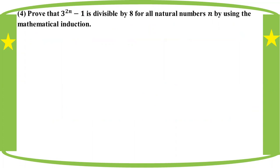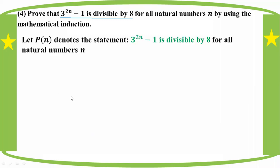Prove that: 3 to the power 2n minus 1 is divisible by 8. That is, 3^(2n) - 1 is divisible by 8, for all natural numbers n, by using mathematical induction.